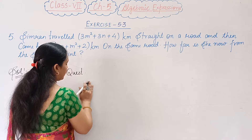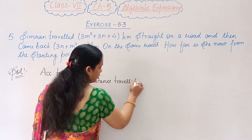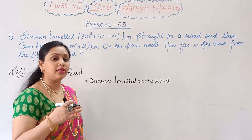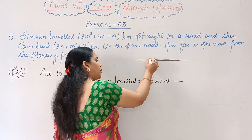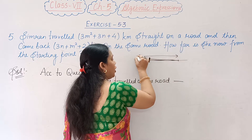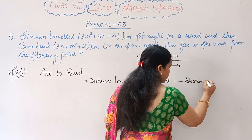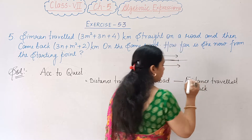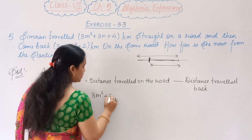From the starting point, we write the distance traveled on the road. That means the distance covered on the way forward minus the distance covered on the way back. Because she went back some distance, it will be minus since you have covered the total distance going forward. Distance traveled back is 3m squared plus 3n plus 4, total distance covered, minus the distance back.